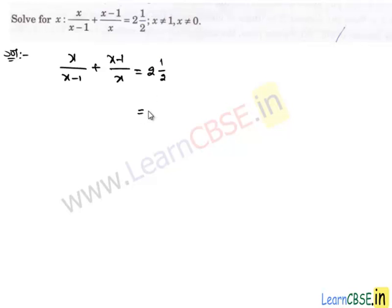So we convert it into improper fraction by adding the integral part 2 to the fractional part. And on LHS we take the LCM of the denominators, which is x and x minus 1, and it is equal to their product.